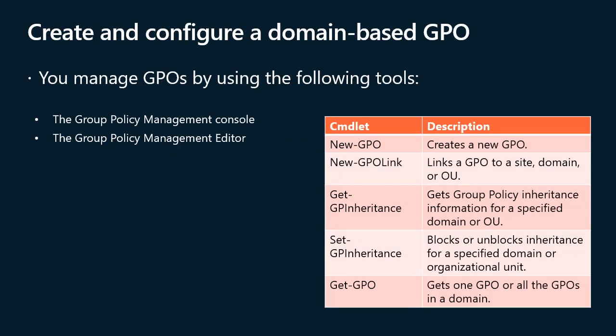You manage GPOs by using the Group Policy Management Console and the Group Policy Management Editor. You can also use Windows PowerShell cmdlets to manage GPOs and their settings, including: New-GPO, which creates a new GPO; New-GPLink, which links a GPO to a site, domain, or OU; Get-GPInheritance, which gets group policy inheritance information for a specified domain or OU; Set-GPInheritance, which blocks or unblocks inheritance for a specified domain or OU; and Get-GPO, which lists one GPO or all GPOs in a domain.